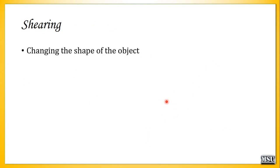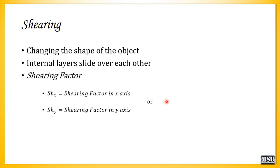The next transformation is shearing. Shearing changes the shape of the object — internal layers are sliding over each other. To perform shearing, we need shearing factors: shx, the shearing factor in the x-axis, or shy, the shearing factor in the y-axis.